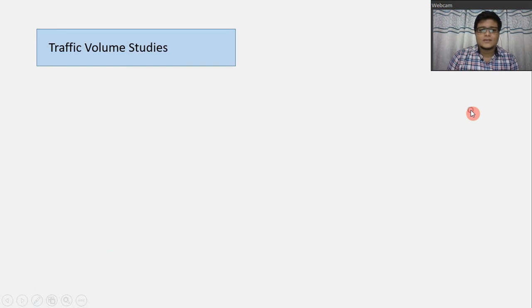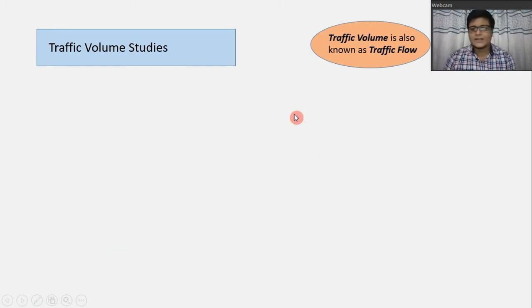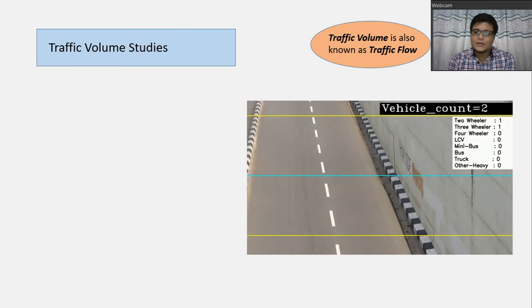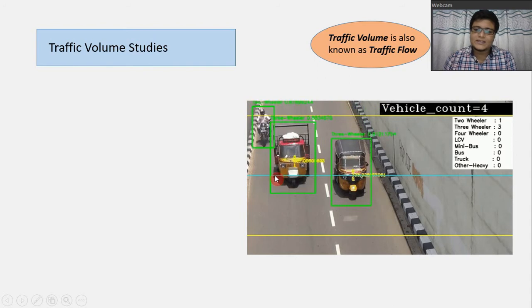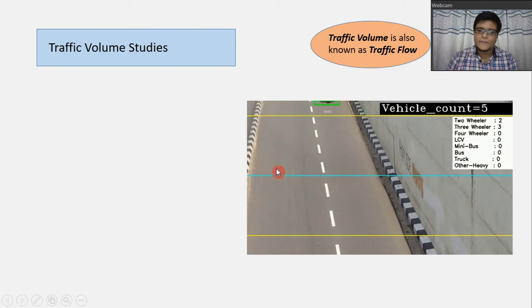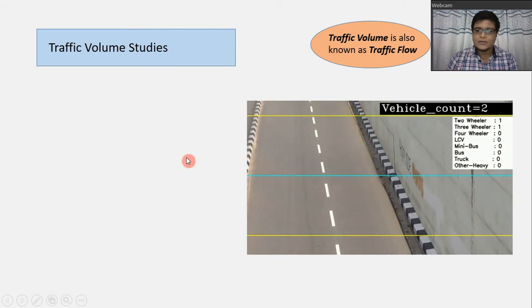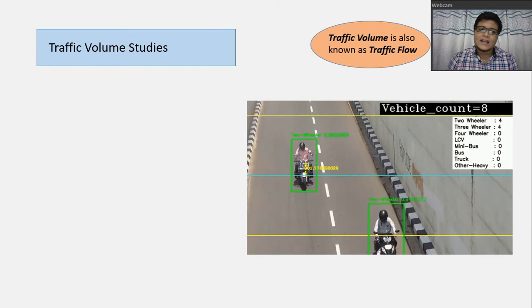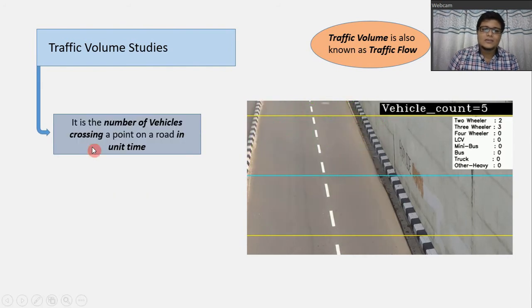Let us start with traffic volume studies. The traffic volume is also known as traffic flow. In the video we can see there is a blue line — the yellow lines are guidelines, so ignore those. This is a specific part of the road, and whenever any vehicle crosses the blue line, we record it. That is how we count the number of vehicles and also record the time duration to determine traffic volume, which is the number of vehicles divided by the duration of counting.